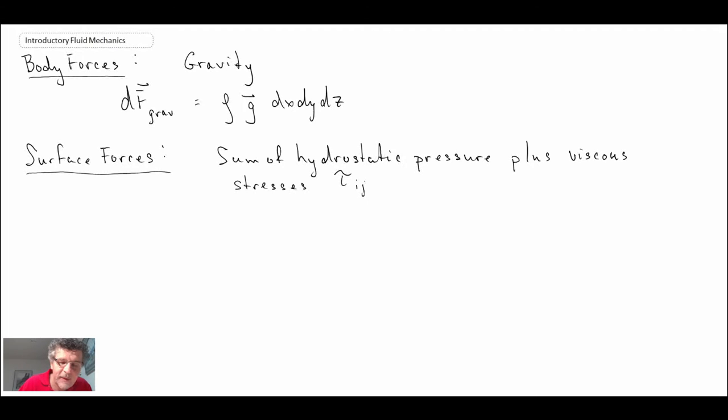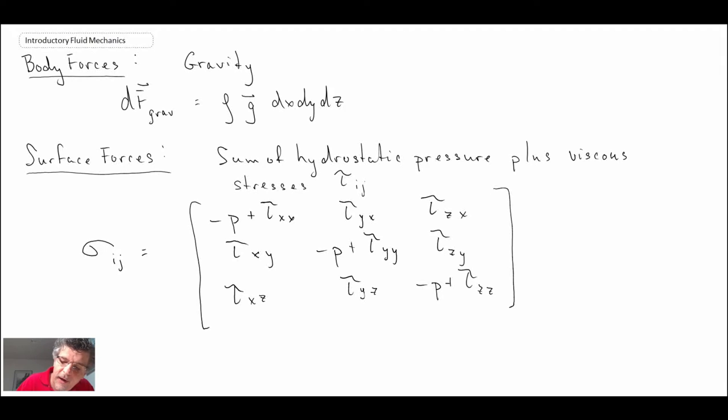We're going to begin with a stress tensor for the fluid itself. We're going to write this out as a matrix. You'll notice on the diagonal we will have the pressure. So those are the first elements. There are nine of these.